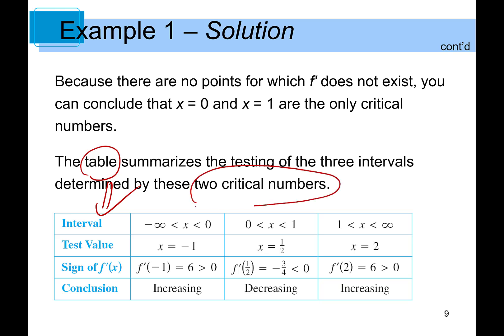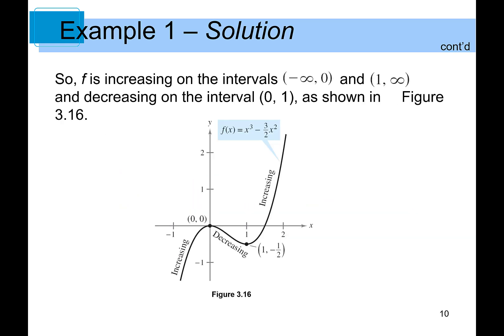The two critical numbers are crucial to separate the domain into different sub-intervals and test each interval correspondingly. Looking at the graph: from negative infinity to 0, the graph is going up, so the slope of the tangent line is positive. From 0 to 1, it's decreasing — the slope of the tangent line is negative. From 1 to positive infinity, it's going up again and the slope of the tangent line is positive.